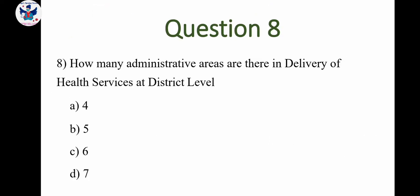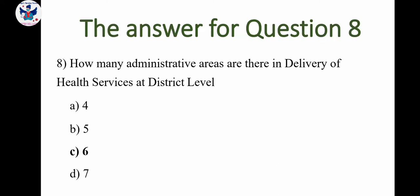Next question: How many administrative areas are there in delivery of health service at district level? Option A: 4, B: 5, C: 6, D: 7. The correct answer is option C, 6.